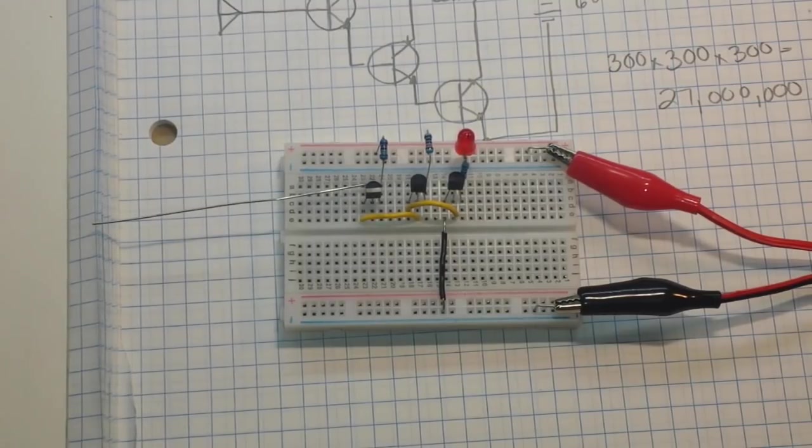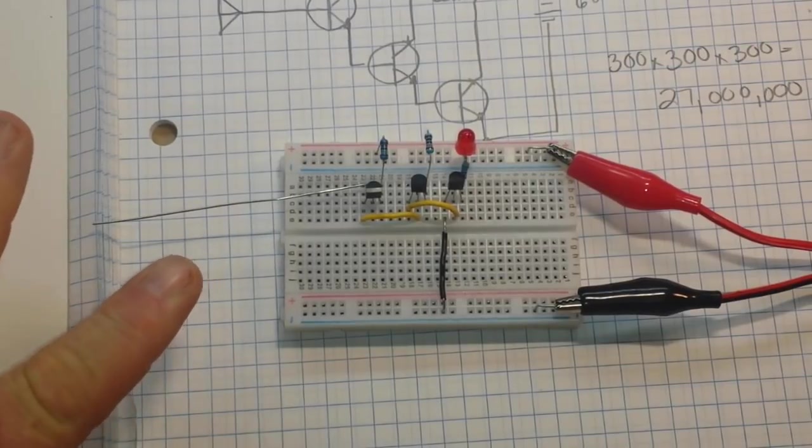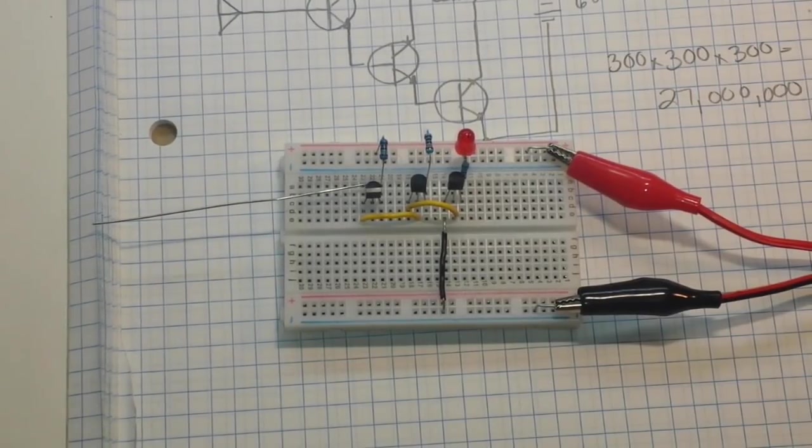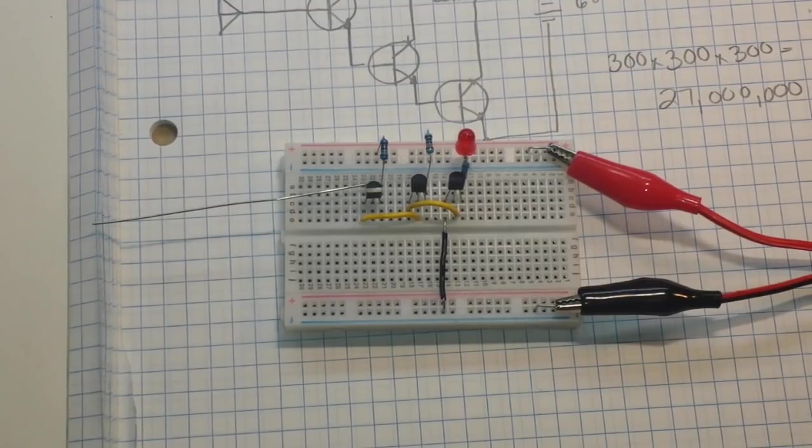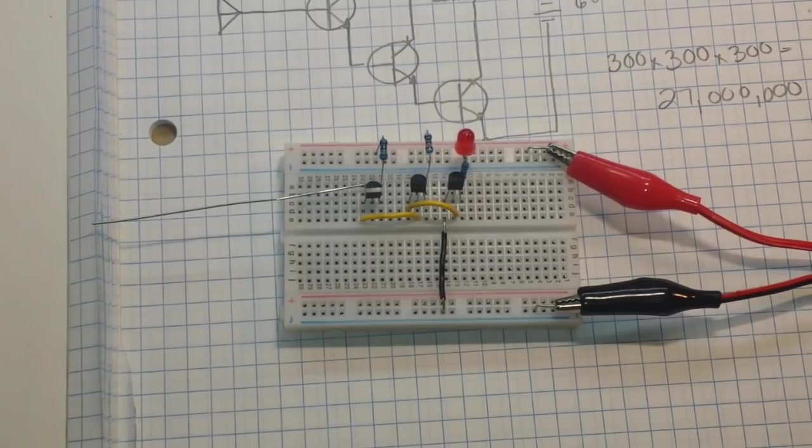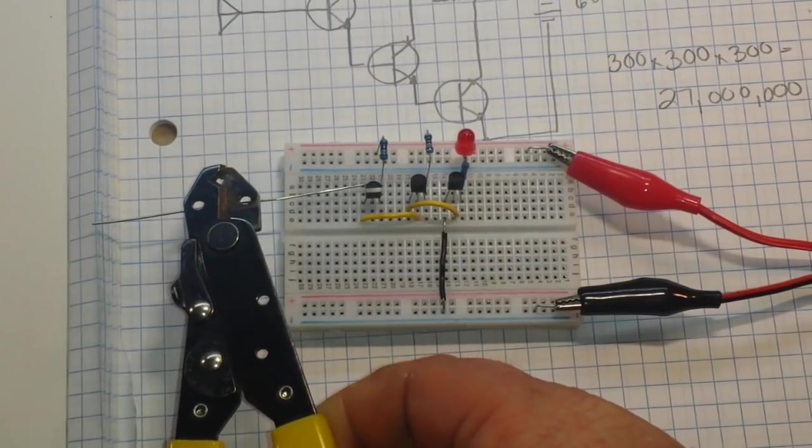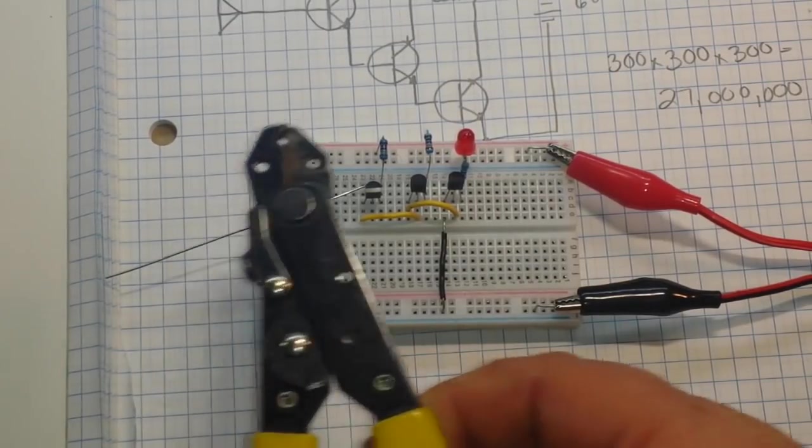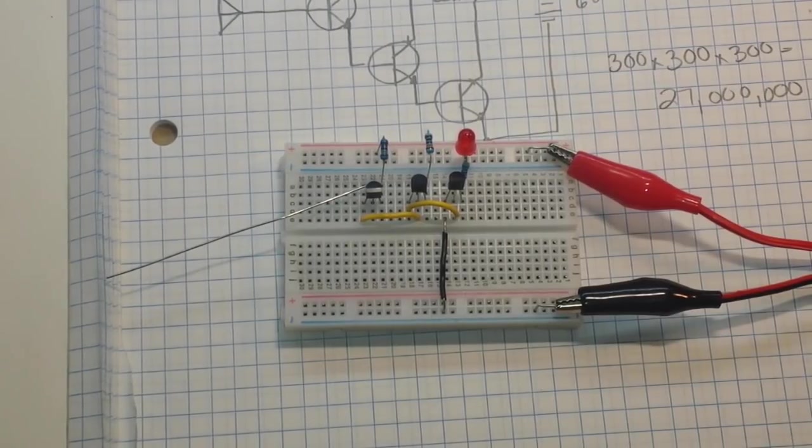Take this around your house, but please do not touch this piece of metal to any mains or line electricity. Please don't do that. But take it around your house and bring it near different things and just see what holds a charge, because you will be surprised at where you'll find a static electricity charge.